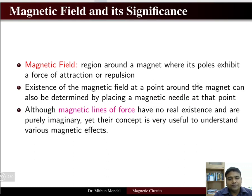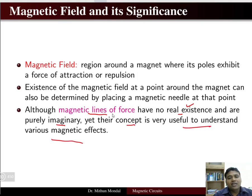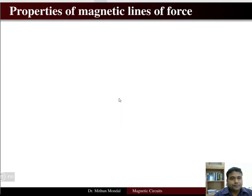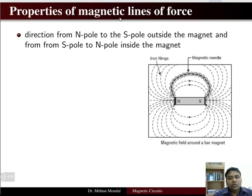If you want to find the existence of the magnetic field at a particular point where a magnet is present, just place a magnetic needle. Although magnetic lines of force have no real existence and are purely imaginary, the concept is very useful to understand various magnetic effects. To understand the properties of magnetic lines of force, let us take an example of a bar magnet and observe the magnetic field around it.